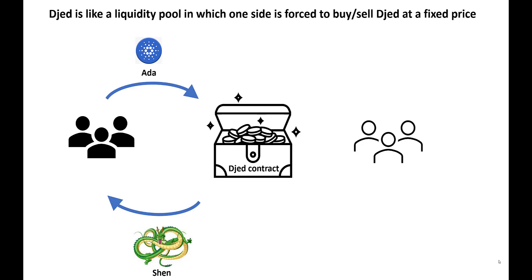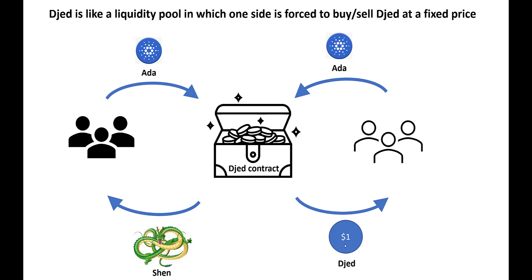On the right hand side you have stablecoin holders — people that hold ADA but want to trade it for a stablecoin pegged to one US dollar. They put in their ADA and get back a Djed token worth one US dollar. At a later point they should always be able to exchange that Djed token for one US dollar's worth of ADA. The contract has to guarantee this, otherwise people would lose faith in it — and that guaranteed redemption is an important feature of an algorithmic stablecoin.